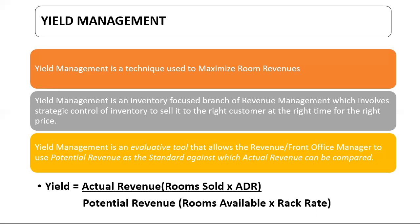Yield management is an evaluating tool that allows the revenue or front office manager to use the potential revenue as the standard against which actual revenue can be compared. Looking at the formula: yield equals actual revenue upon potential revenue. Actual revenue is rooms sold multiplied by average daily rate or ARR. Potential revenue is total rooms available in the hotel multiplied by the rack rate.